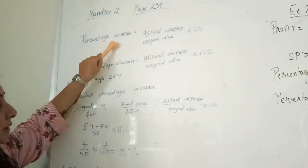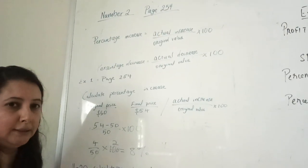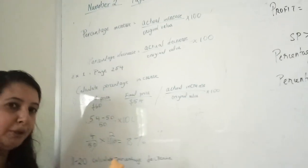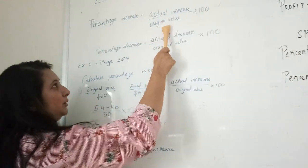The formula for percentage increase will be actual increase, meaning they will give you two numbers - the original price and final price. You need to find the difference divided by original value times 100.